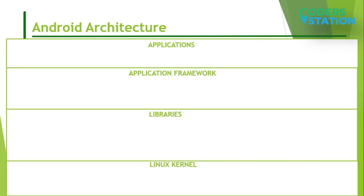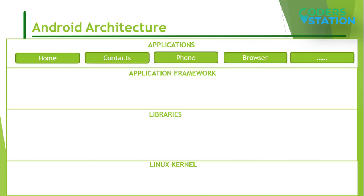First one is Application. Application is the top layer of Android architecture. The pre-installed applications like Home, Contacts, Camera, Gallery, etc. and third-party applications downloaded from Play Store like Chat applications, Games, etc. will be installed on this layer only. It runs with Android Runtime with the help of classes and services provided by Application Framework.